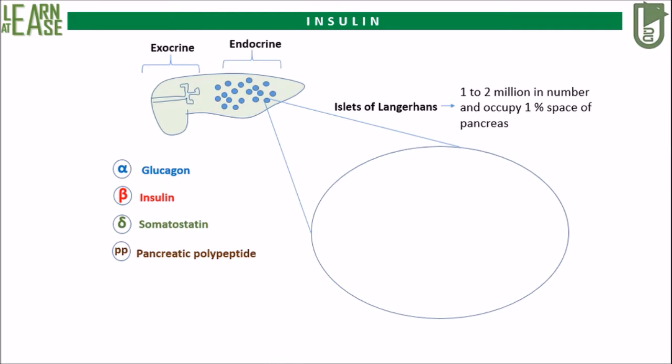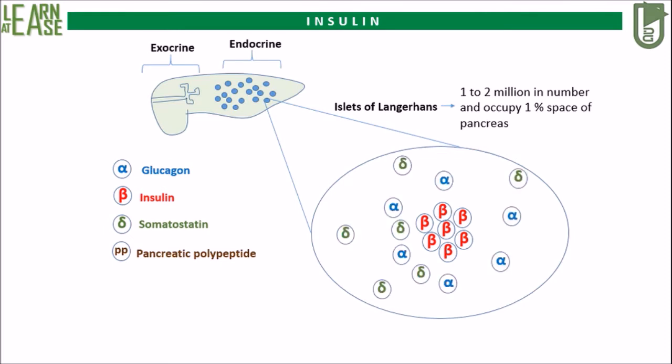The arrangement of these cells in the islets of Langerhans is remarkable. In the center there is a cluster of beta cells, whereas alpha cells are arranged in their periphery. Delta and PP cells are scattered throughout the islets of Langerhans and do not show any specific arrangement. These cells interact with one another in a paracrine fashion.